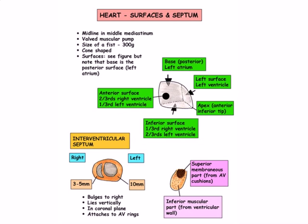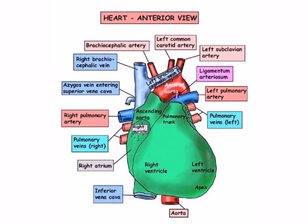The heart has a base which faces posteriorly and lies immediately anterior to the esophagus and the descending aorta in the posterior mediastinum. The base is mostly the left atrium, but with a small amount of the right atrium as well. The left surface is the left ventricle and the right surface is the right atrium, each related laterally to the respective phrenic nerve and lung. The anterior surface lies behind the sternum and costal cartilages, and what constitutes the anterior and inferior surface is largely dictated by the position of the interventricular septum.